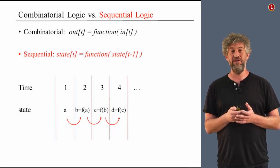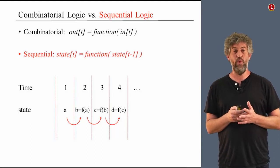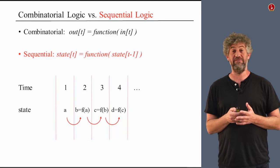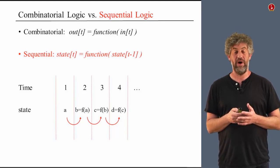So now we can have a single bit, for example, that holds state. And if at time one, it was some kind of input a, at time two, it will be some kind of function of a, f of a. Basically, f of the previous value that we have, and so on.